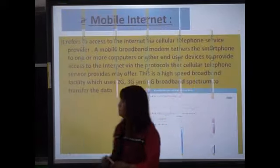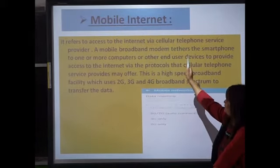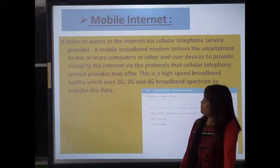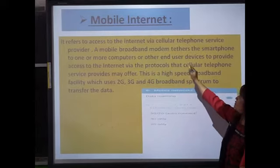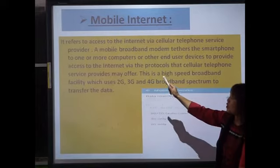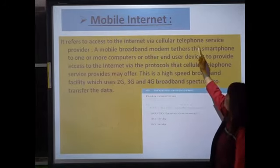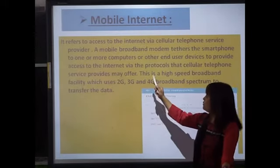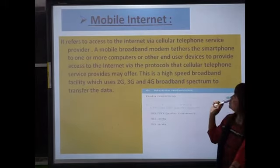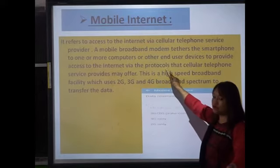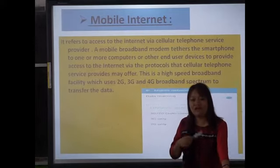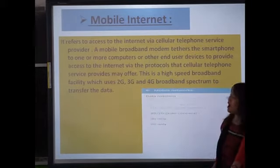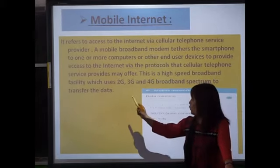The next one is mobile internet. All of us are used to it — mobile internet refers to access to the internet via a cellular telephone service provider. A mobile broadband modem tethers the smartphone to one or more computers or other end-user devices to provide access to the internet via protocols, which I have already discussed in my previous class.